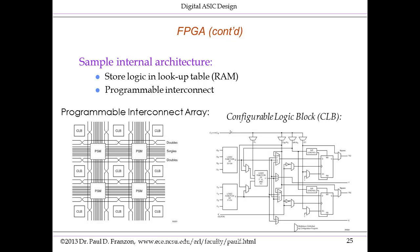An example of a CLB is shown on the right. What you see labeled as logic function are basically small SRAMs — four input, one output SRAMs. Any logic function can be implemented as a lookup table in a memory, and that's exactly what's done here. These SRAMs are programmed through CAD tools to implement predefined combinational logic functions. Any four-input, one-output logic function can be fit in each of those SRAMs.